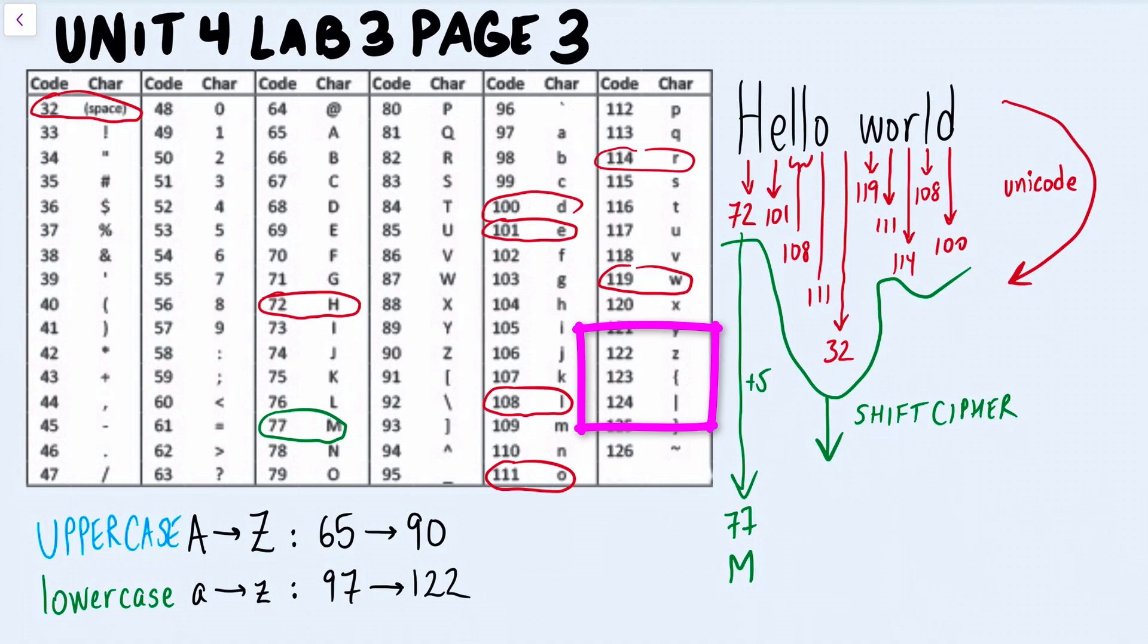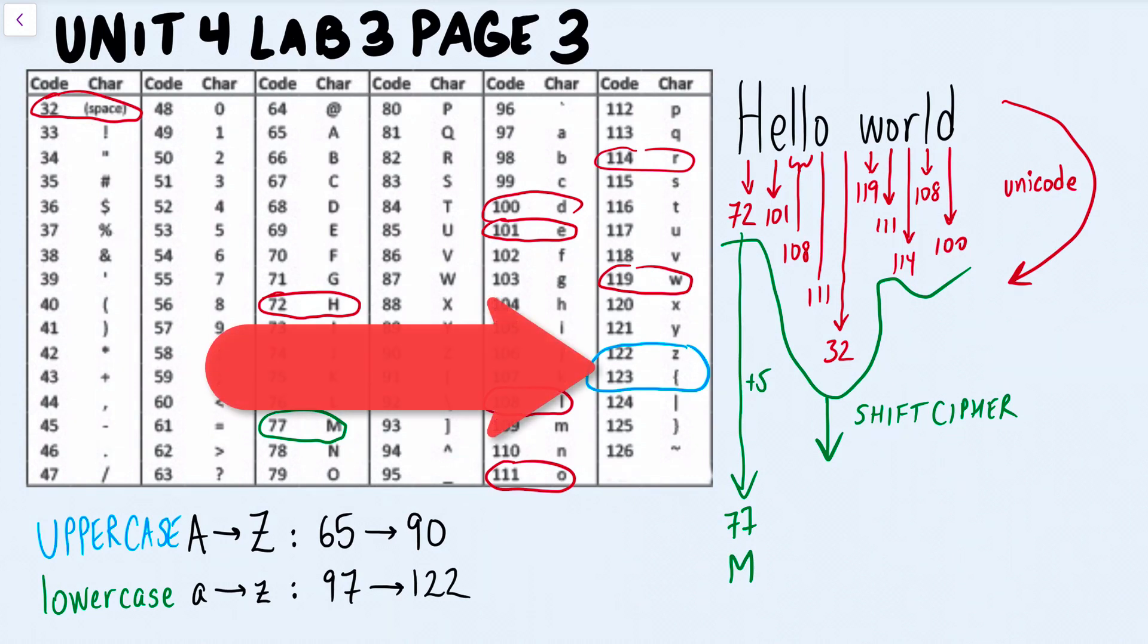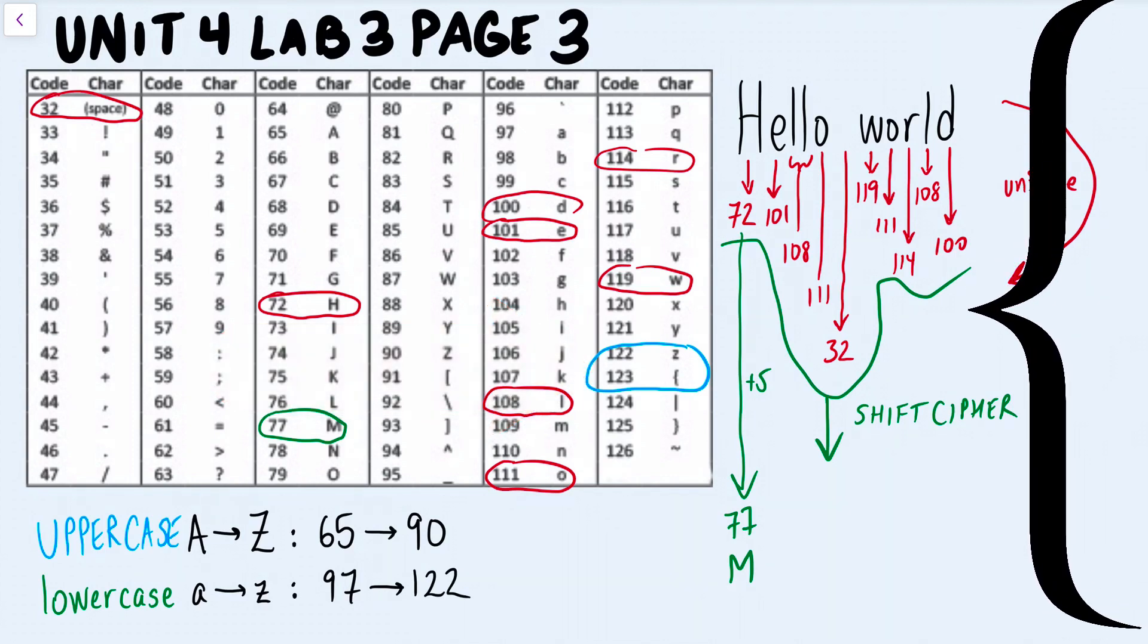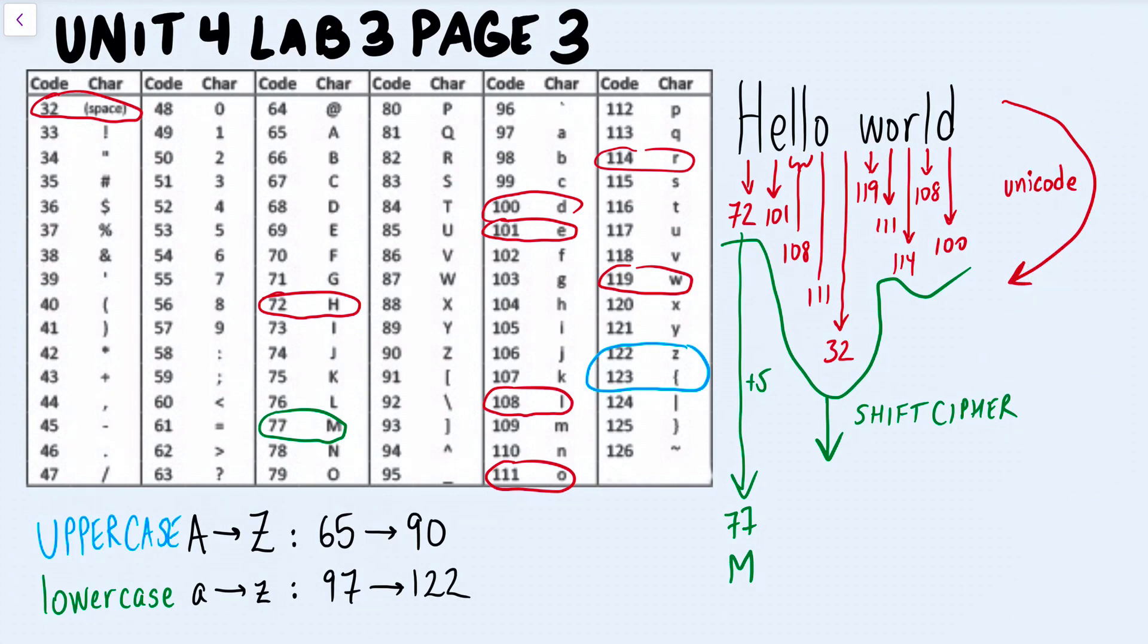If you look over here, let's say I have z, lowercase z, and let's say the shift was 1. Normally, lowercase z, if you shift it 1 to the right, it should be letter a, or lowercase a. But with Unicode, if you shift z by 1, so it becomes 123 from 122, you end up with the opening curly brace, or the left brace. That might not be something you want if you want to have your encoding as all letters.